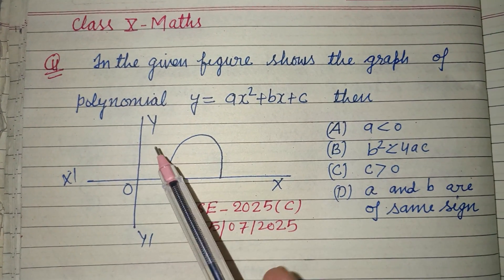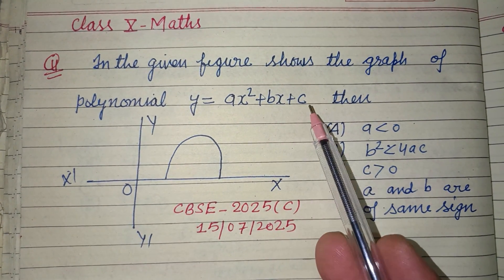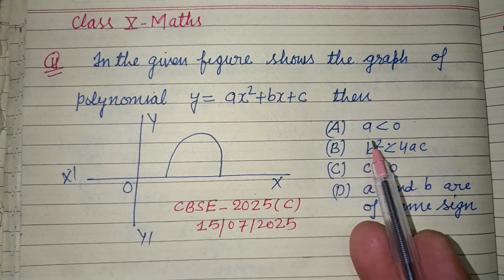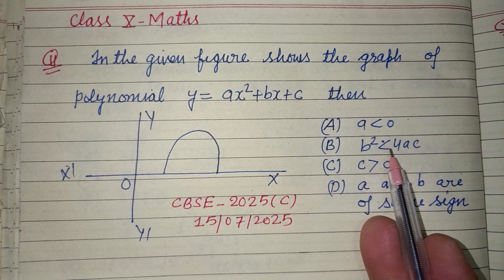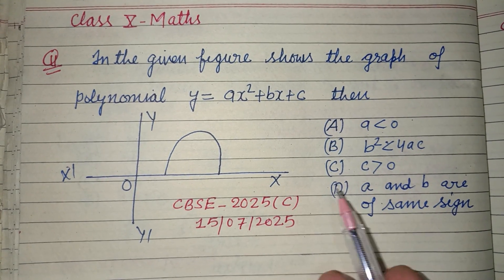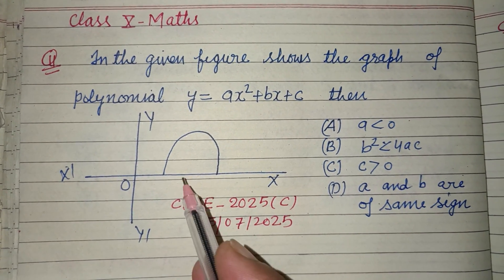(A) a < 0, (B) b² < 4ac, (C) c > 0, (D) a and b are of same sign.